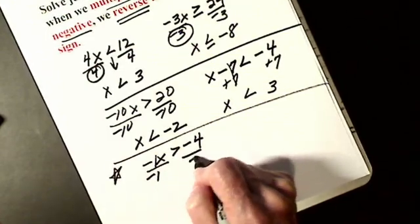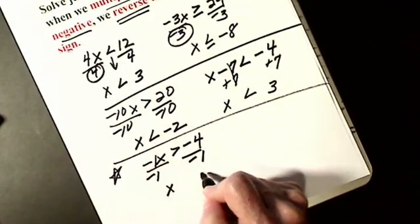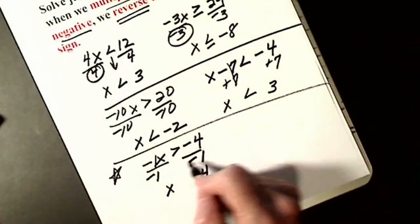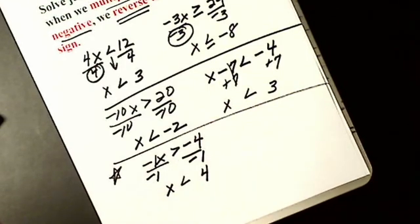So I have to divide each side by negative 1. Here I get x, here I get positive 4. I ask the question, did I divide by a negative? Yes. So greater than becomes less than.